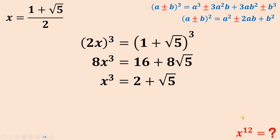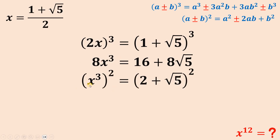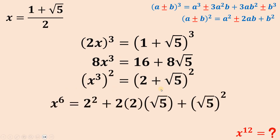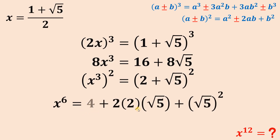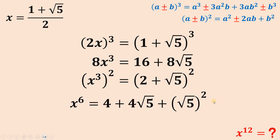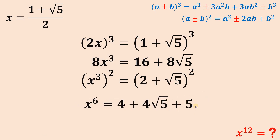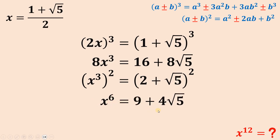Now we have x cubed and we want x raised to the power of 12, so we're going to square both sides. The left hand side becomes x raised to the power of 6. The right hand side follows the pattern a squared plus 2ab plus b squared: 2 squared is 4, 2 times 2 times square root of 5 is 4 square root of 5, and square root of 5 squared is 5. Combining like terms, 4 plus 5 is 9. So x raised to the power of 6 equals 9 plus 4 square root of 5.